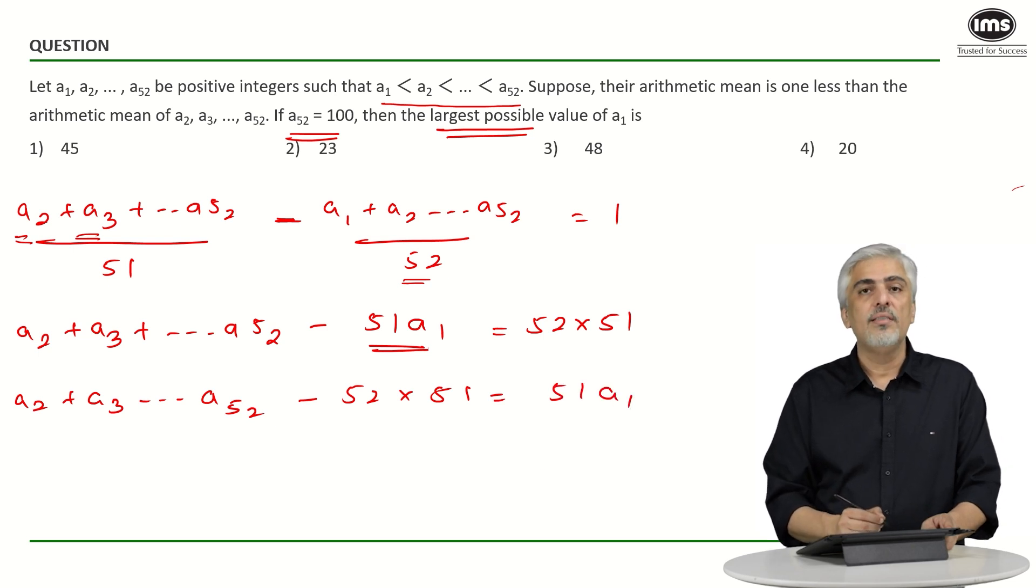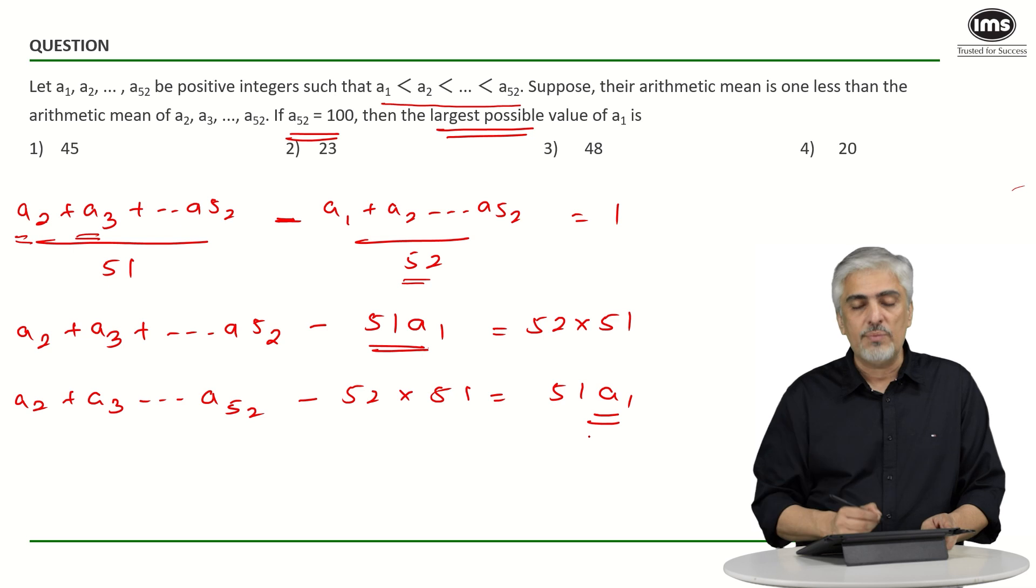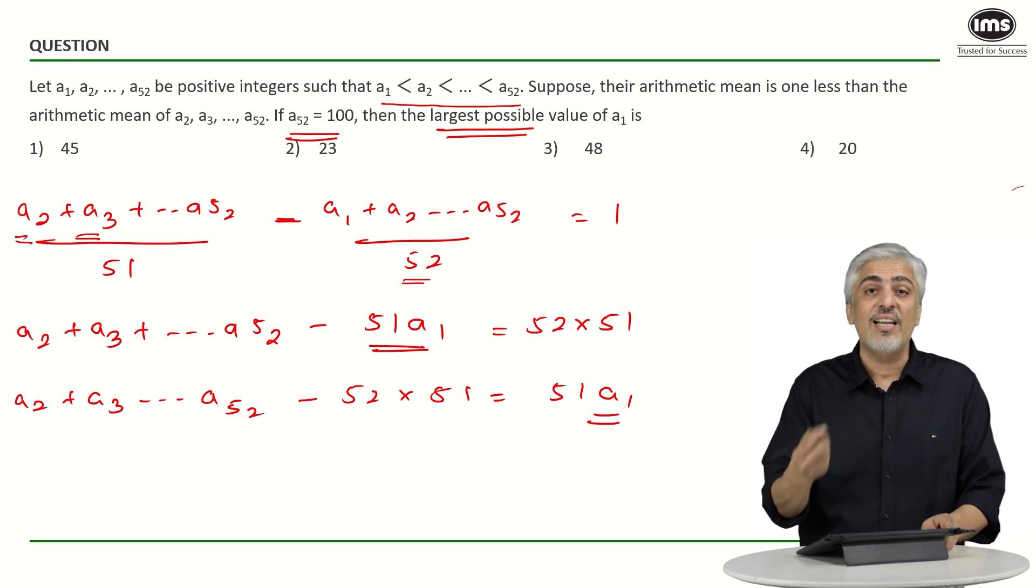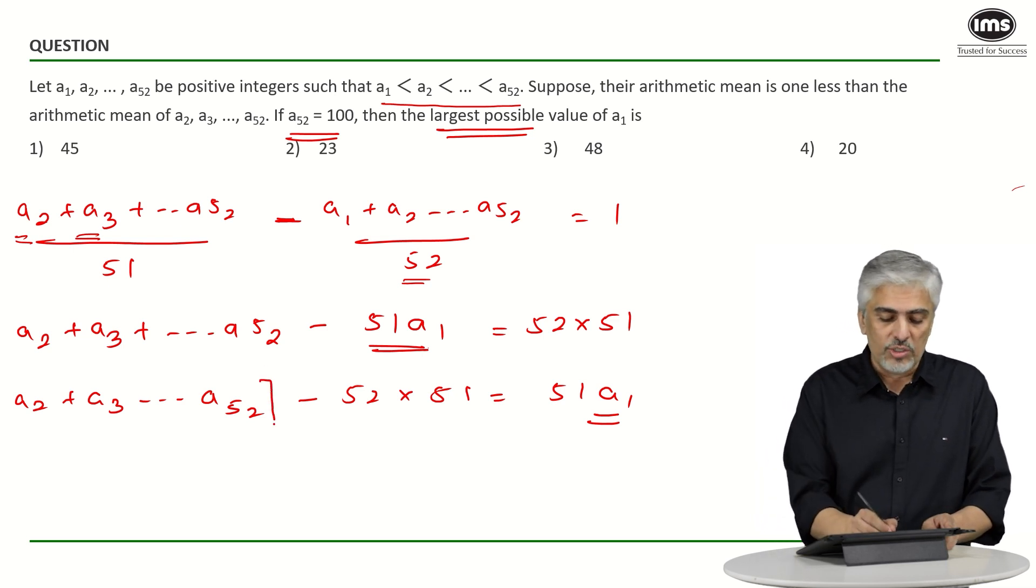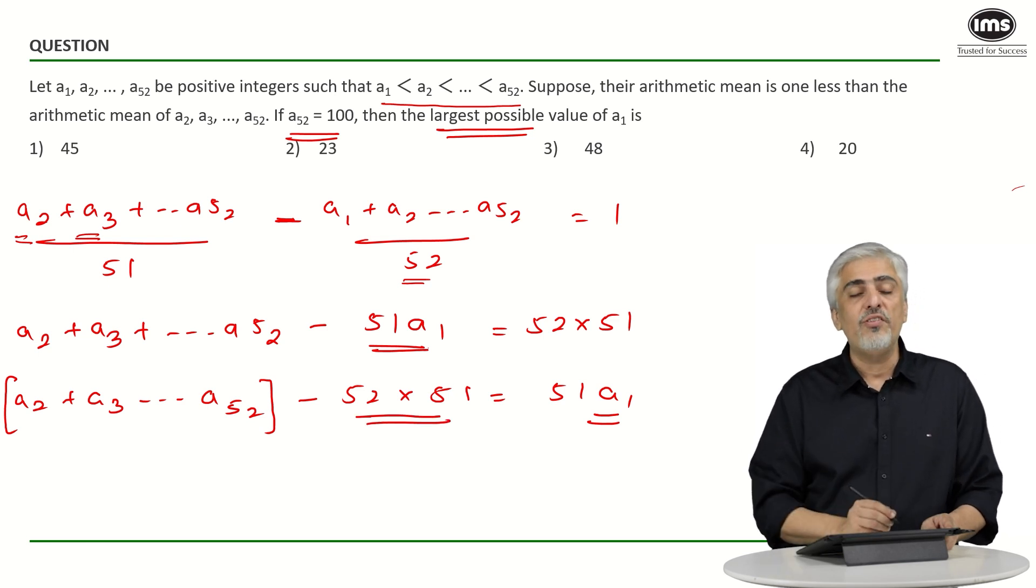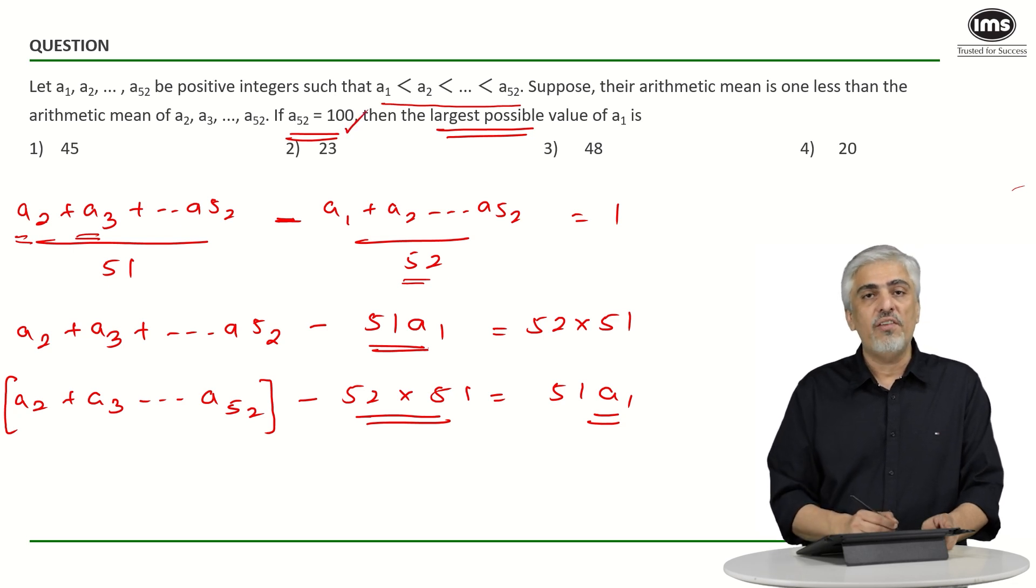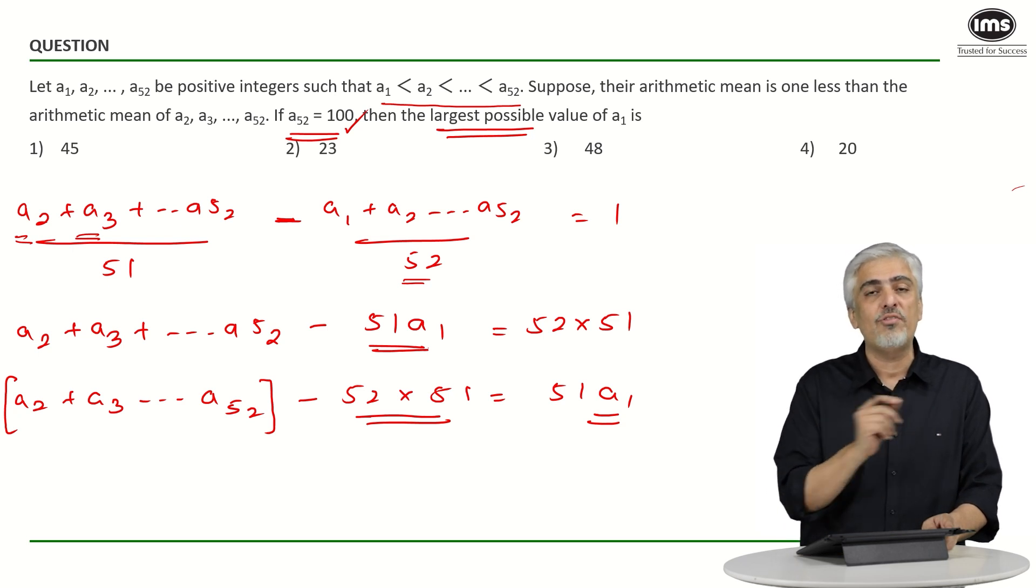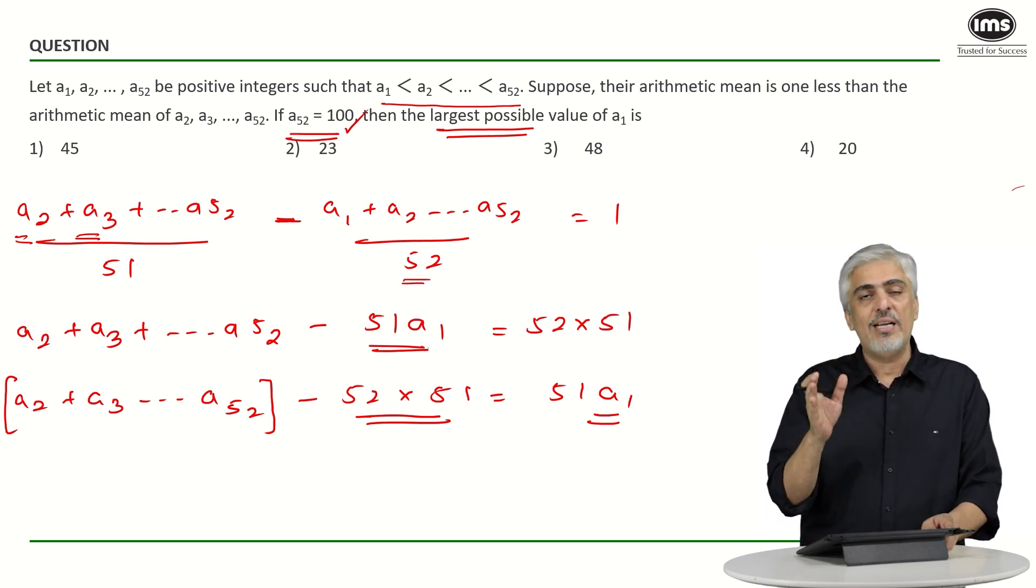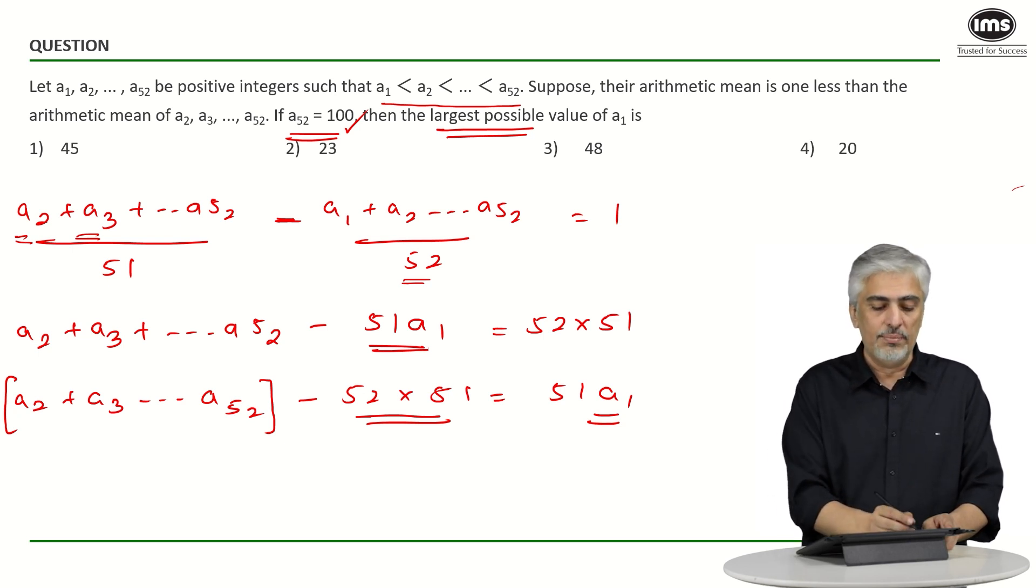Now if I want to take the largest possible value of a1, or I want to find the largest possible value of a1, do you agree this will have to be as large as possible, because this is already a fixed value. So a2 to a52 will have to be as large as possible. Now I already know a52 is 100. So if I want to make all the other terms as large as possible, there will have to be a common difference of 1 and it will have to be arithmetic progression, which means there will be 100, 99, 98, 97, and so on up till 50 being the smallest term.